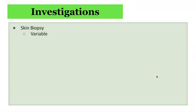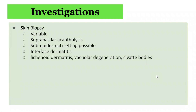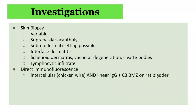In terms of investigations, skin biopsy findings can be variable depending on which cutaneous lesion is biopsied. It can demonstrate suprabasilar acantholysis, sub-epidermal clefting, or an interface dermatitis, particularly with the lichenoid lesions. Lichenoid dermatitis with vacuolar degeneration and Civatte bodies can be seen, as well as a lymphocytic infiltrate. Direct immunofluorescence demonstrates an intercellular chicken wire pattern as well as linear IgG and C3 on the basement membrane zone on rat bladder sample. Pemphigus erythematosus may also have a similar pattern.